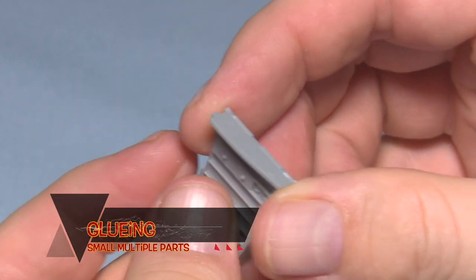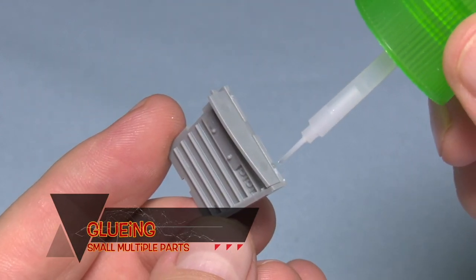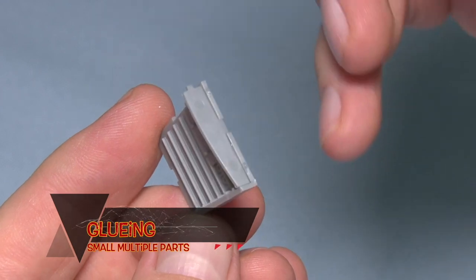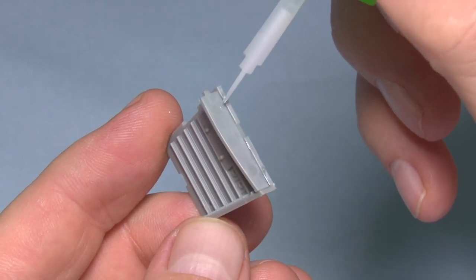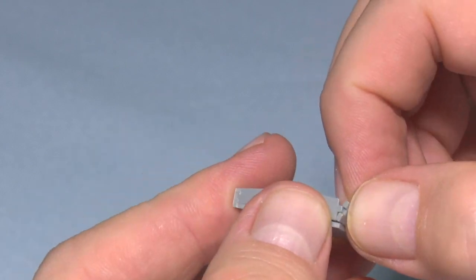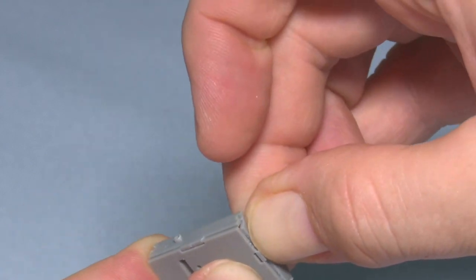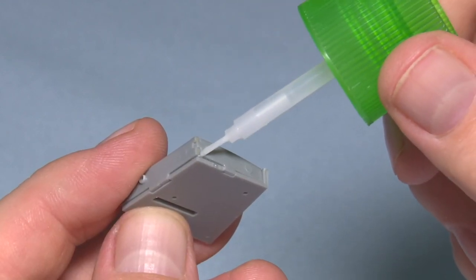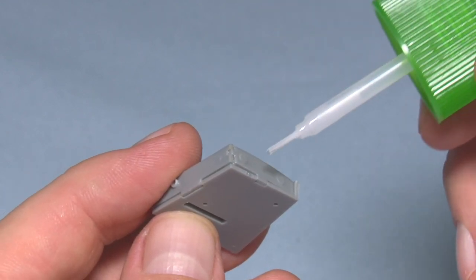When gluing multiple small parts together, sometimes it can be more effective to assemble the pieces together first, and then to apply the glue. This should really only be used on internal parts, as by using the capillary action of the glue, you will get excess glue around the edges.